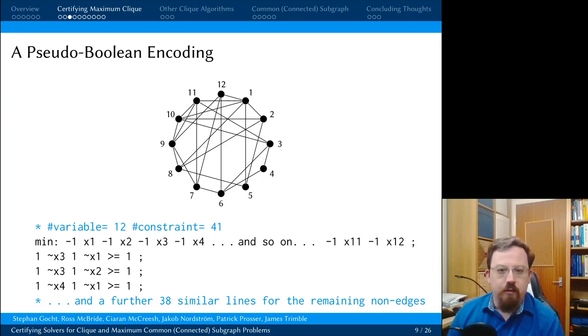We then have our constraints, so for every non-edge in the graph, here we're saying 1 not x3 plus 1 not x1 is greater than or equal to 1. So because vertices 1 and 3 are not adjacent, we can't take them both, so we're saying here that at least 1 has to be false. And we do this for every single non-edge.